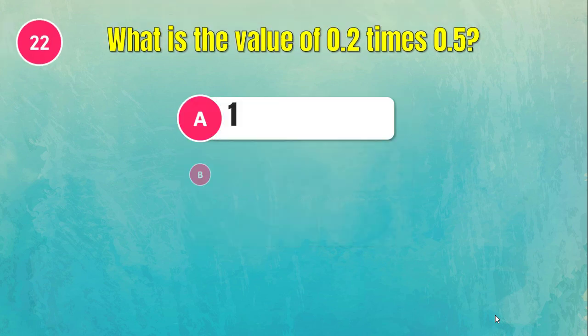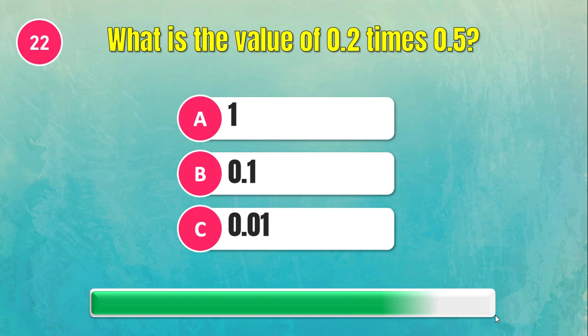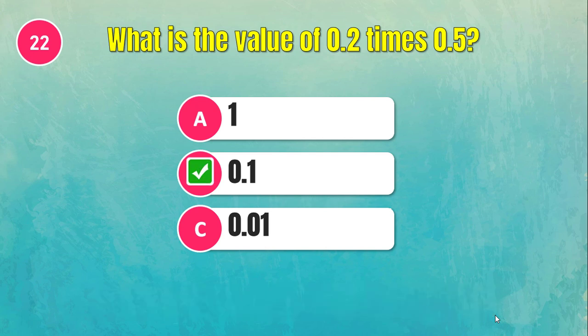What is the value of 0.2 times 0.5? The answer is 0.1.